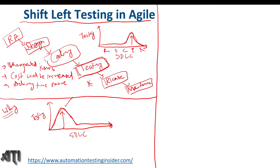The next question is: how do we move towards shift left testing? We have a couple of frameworks. We have TDD and BDD. TDD is test-driven development and BDD is behavior-driven development. In TDD, we first write the test cases and based on that we implement the coding later on.